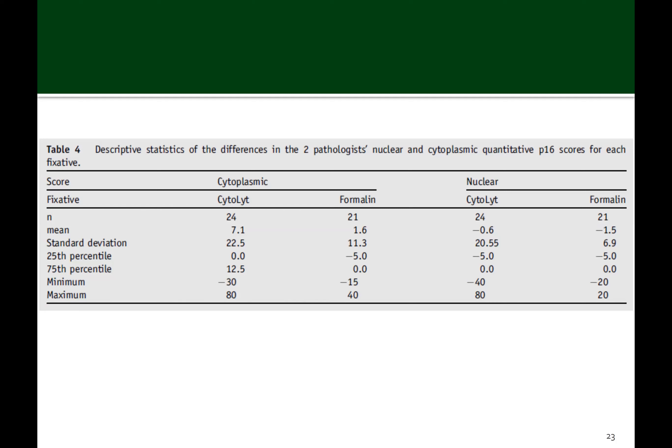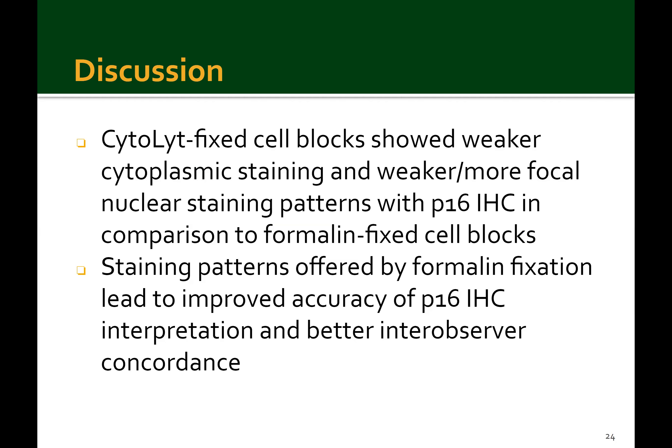Descriptive statistics regarding the differences in the two pathologists' quantitative scores show overall improved consistency in both nuclear and cytoplasmic scores using formalin. The cytolite cell block group had a standard deviation two times higher for cytoplasmic scores and three times greater for nuclear scores compared to the formalin cell block group. Overall, this study demonstrated that cytolite-fixed cell block material from histologically verified P16 positive lesions showed weaker cytoplasmic and more focal nuclear staining with P16, while formalin-fixed specimens yielded more diffuse and intense staining of both compartments, resulting in improved accuracy of P16 IHC interpretation and better inter-observer concordance.